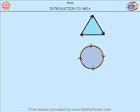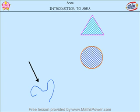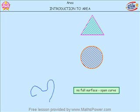Notice that all of the shapes are joined by their outside edge. If the shape looks like this, it's not really a shape, is it? We can't say that it has an area. There is no one full surface — that's just called an open curve. It has no full surface; it's an open curve.